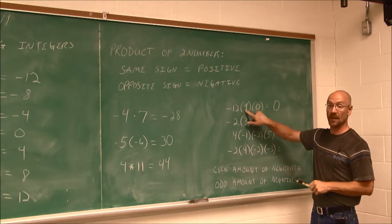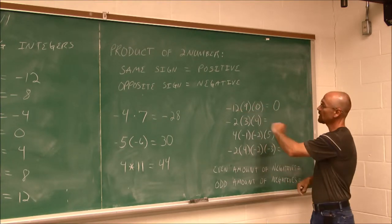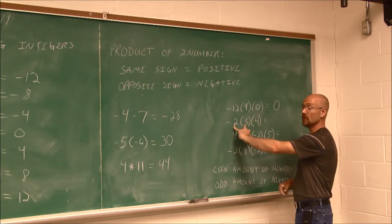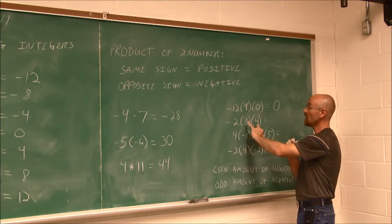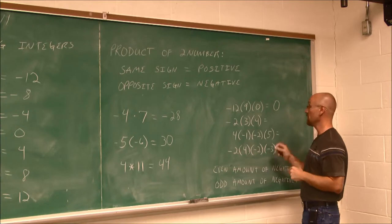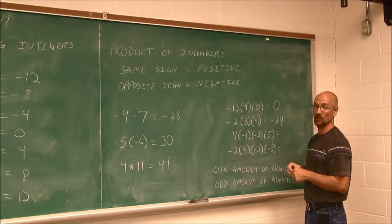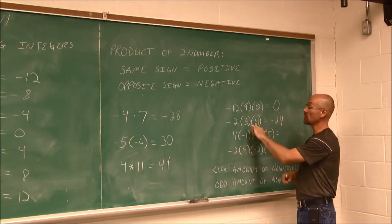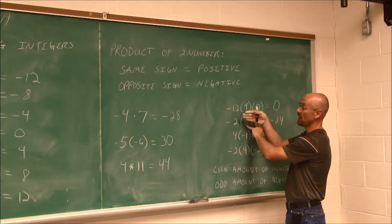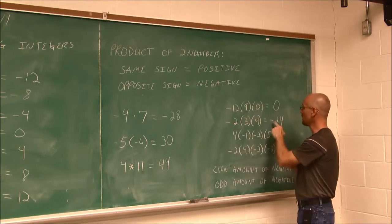I could have multiplied 0 times 9 and then times 12 — I can do it in any order. Now negative 2 times 3: that's negative 6 because they have different signs. Now I have negative 6 times 4 — those have different signs, so opposite signs give me a negative — this is going to be negative 24. I could have gone the other way: 4 times 3 is 12, same sign, that's positive, but then multiplying by negative still gives negative 24.